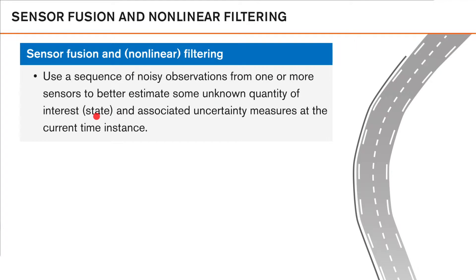However, we are not just content with an estimate — we're also interested in finding the associated uncertainty measures, that is, how sure we are of our estimate. And we want to do this at the current time instance, and then at the next time instance, and the next, and so on. This is perhaps a bit too high level, so let's try to make it a bit more concrete by considering an example.